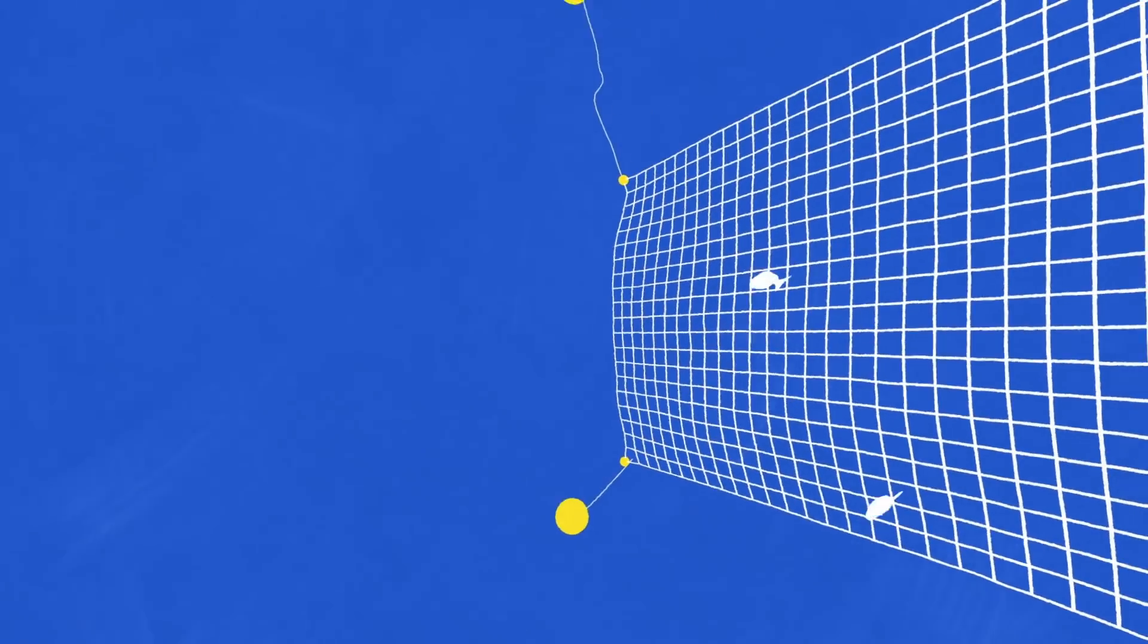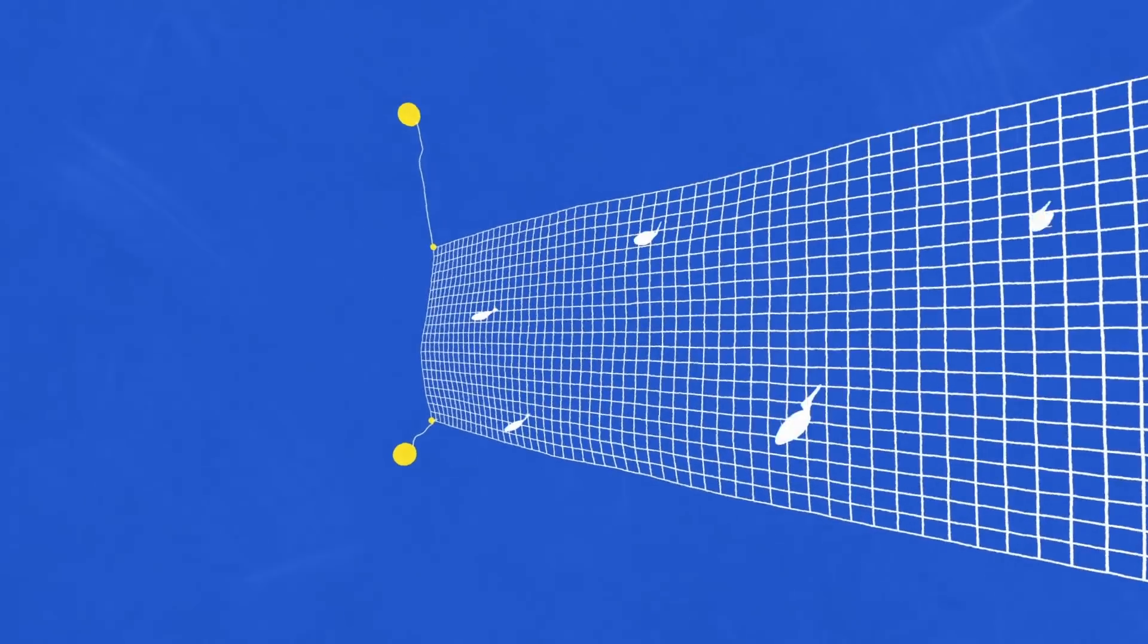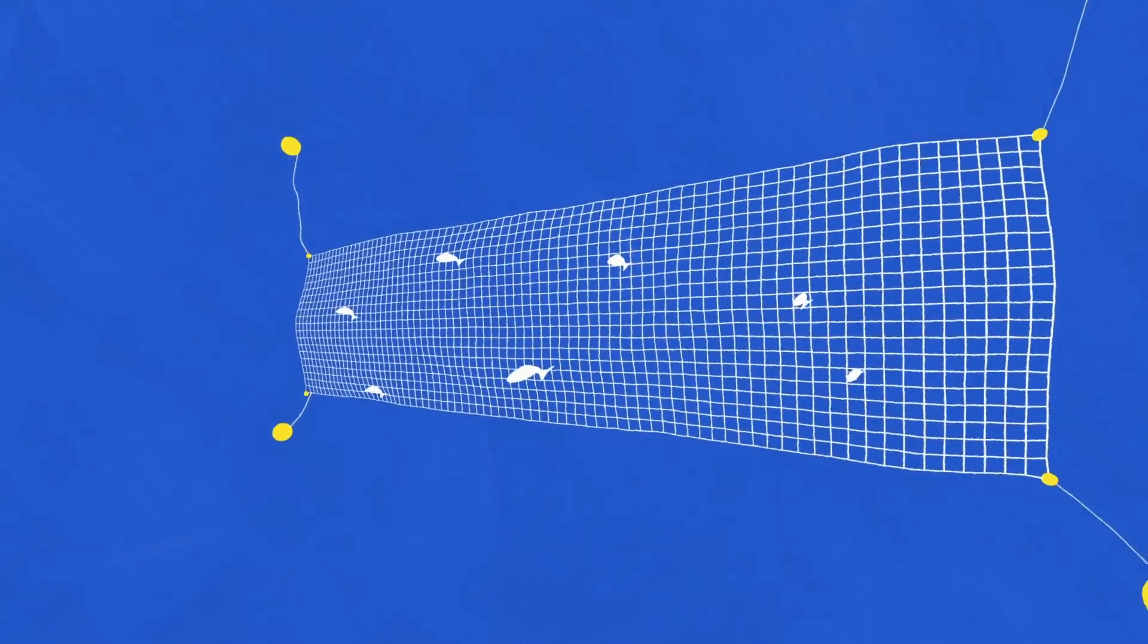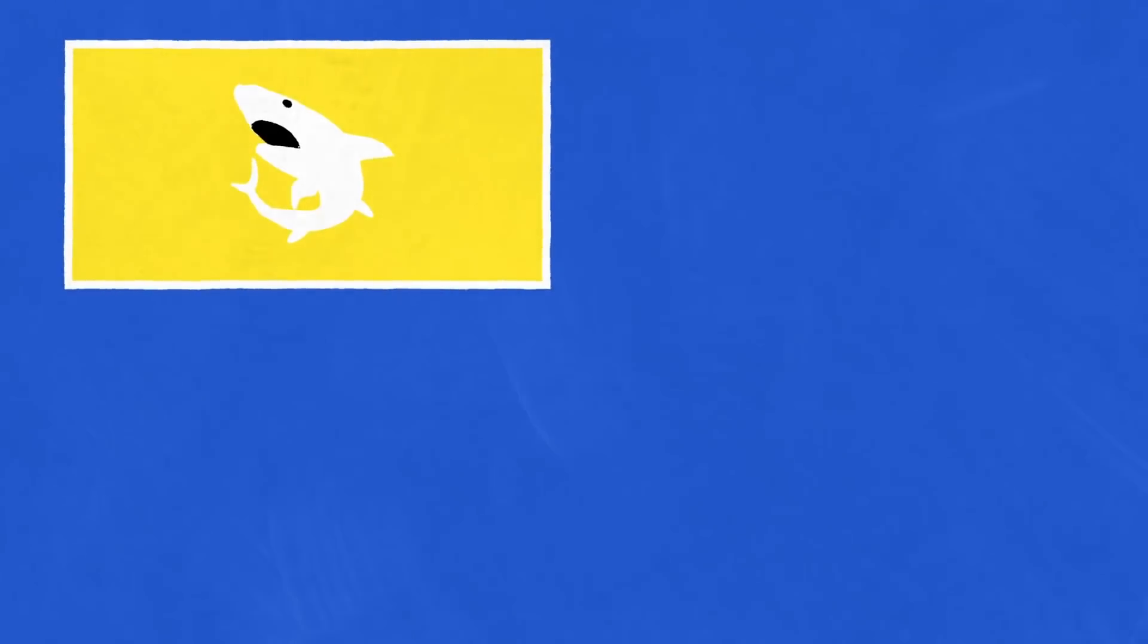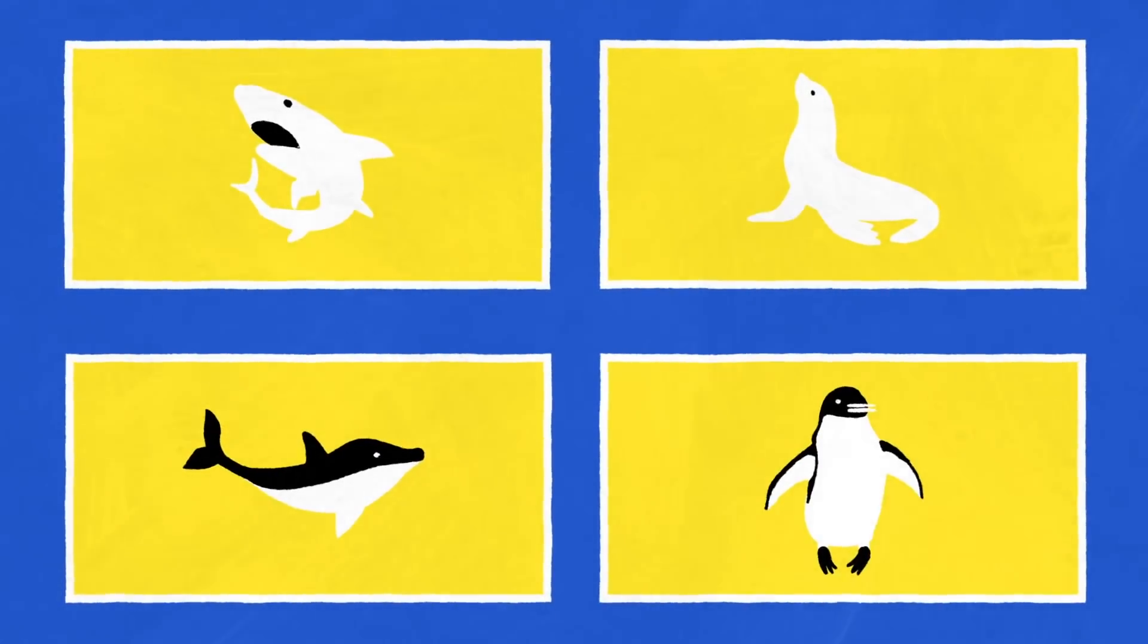Set nets form a wall that entangles fish. The mesh can be big enough to let undersized fish through but they also catch sharks, seals, dolphins and penguins. They're a major hazard for our endangered species.